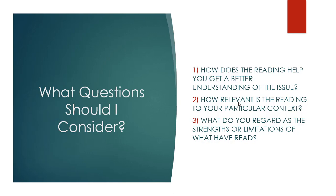Number two: how relevant is the reading to your particular context? This is a place where people really struggle. In very broad research areas, it's easy to become overwhelmed by so many articles, both because you might find them all equally interesting and because there are so many publications on similar topics. It's really important to narrow down which sources are directly relevant to the context you're discussing — straying from that just creates more work analyzing literature that isn't in your best interest to use.